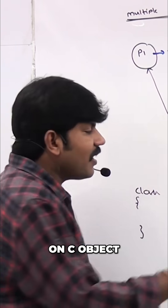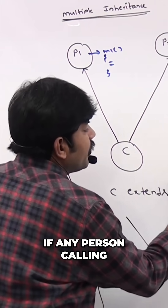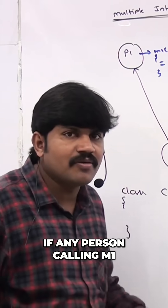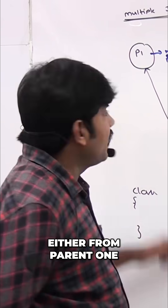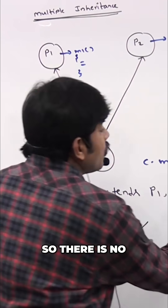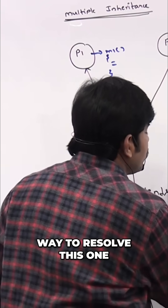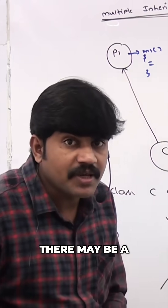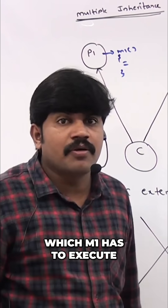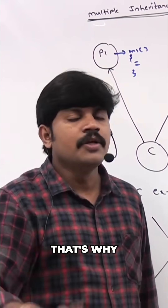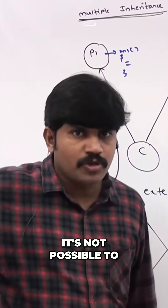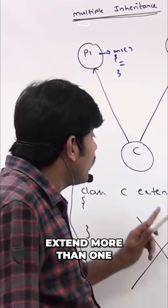From P1, one m1 is coming; from P2, one m1 is coming. Now on a child object C, if any person calls the m1 method, which m1 has to execute — either from parent 1 or from parent 2? There is no way to resolve this — there may be an ambiguity problem. The compiler or JVM is always in trouble. That's why, because of this ambiguity problem, it's not possible to extend more than one class simultaneously.